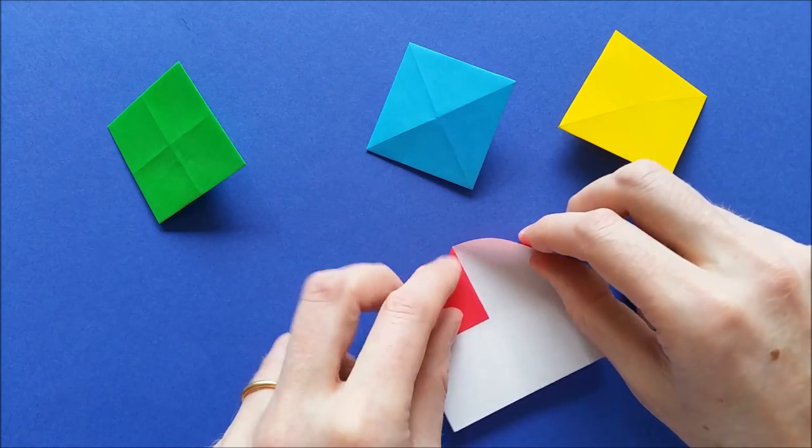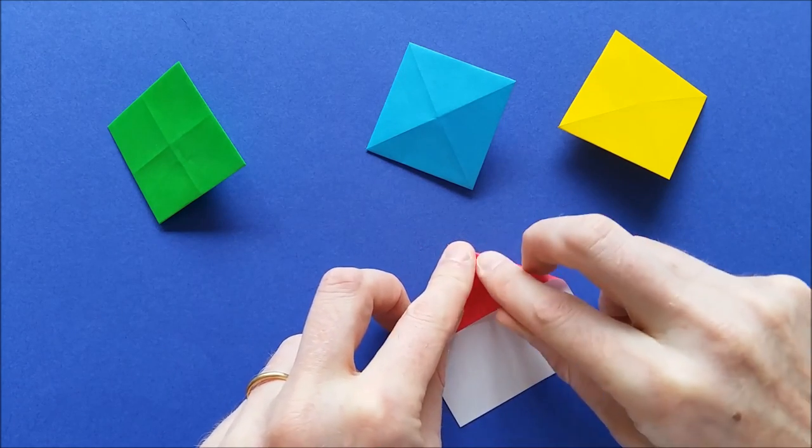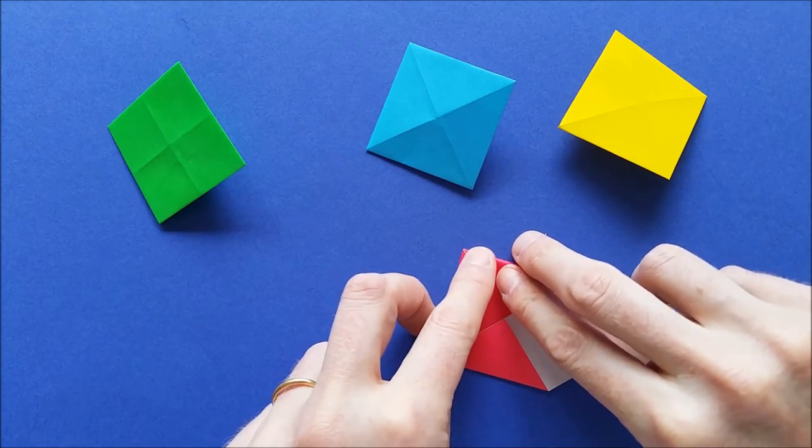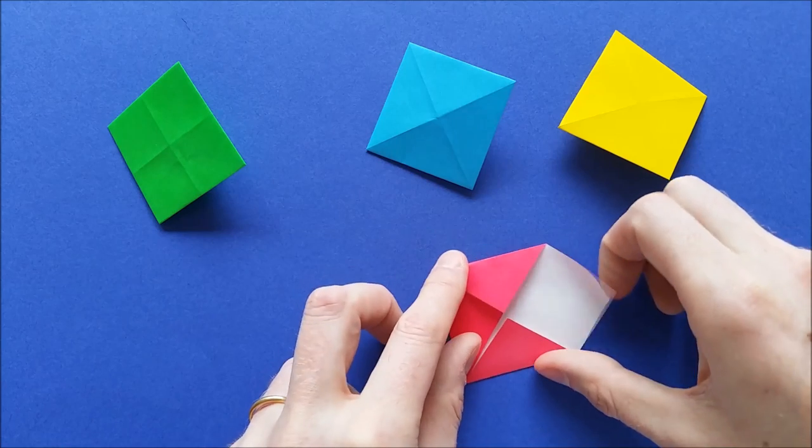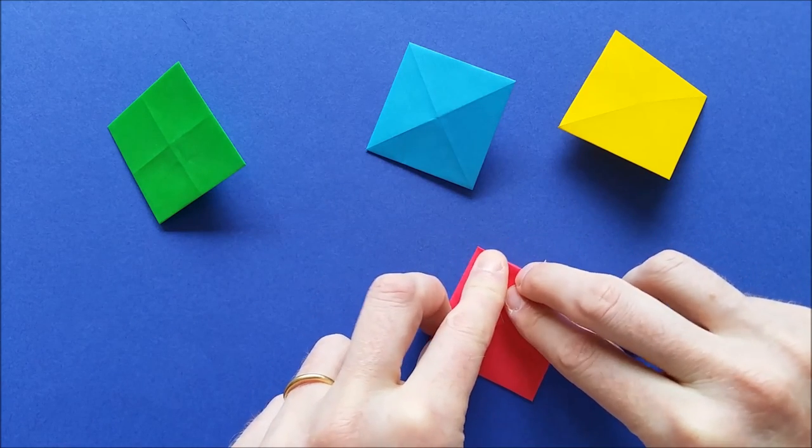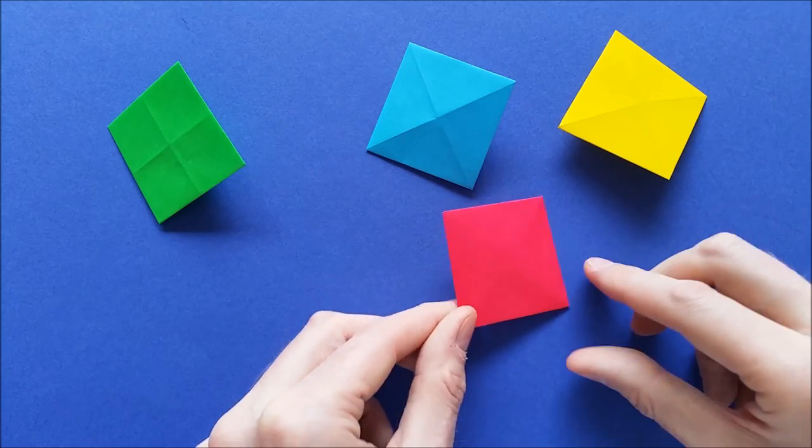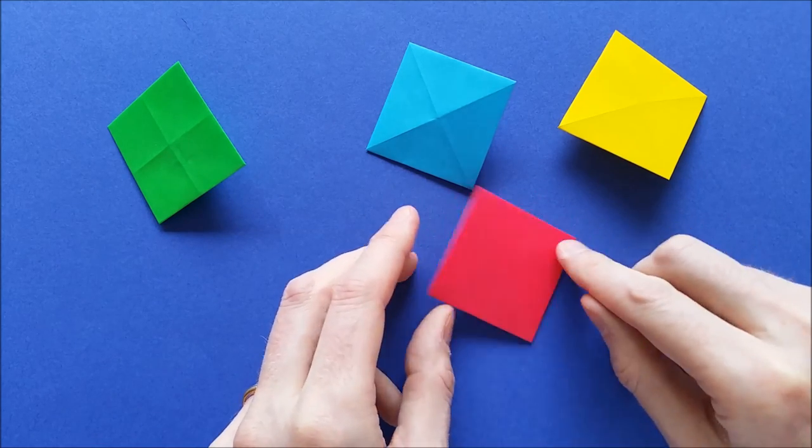And now you can just fold the corner using the two pinches as references. And fold the other corners. And then on the front side the resulting pixel does not have any crease.